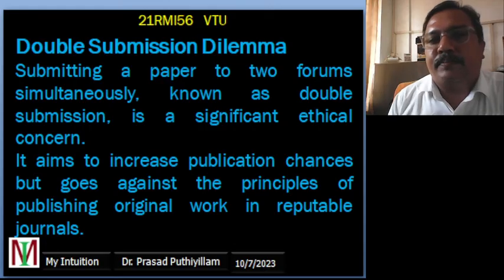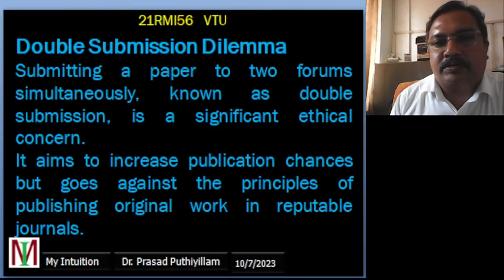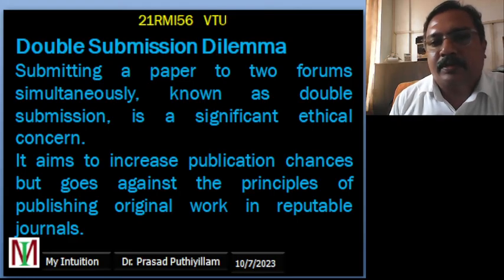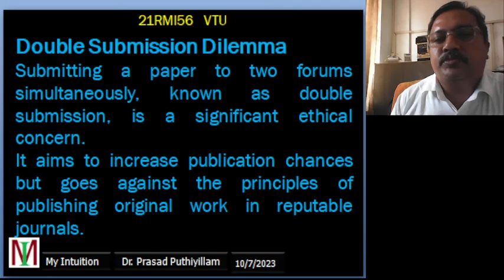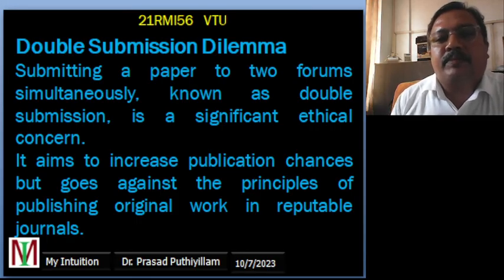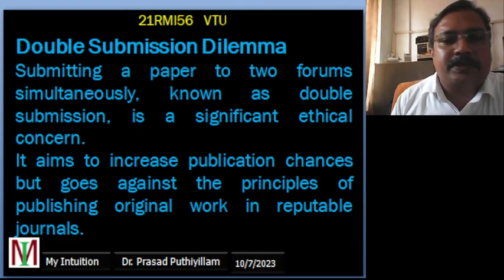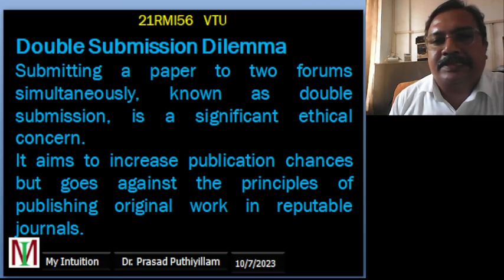Double submission dilemma: submitting a paper to two journals or two forums simultaneously is known as double submission. It is a significant ethical concern — it aims to increase publication chances but goes against the principle of publishing original work in a reputed journal, and is therefore considered unethical.